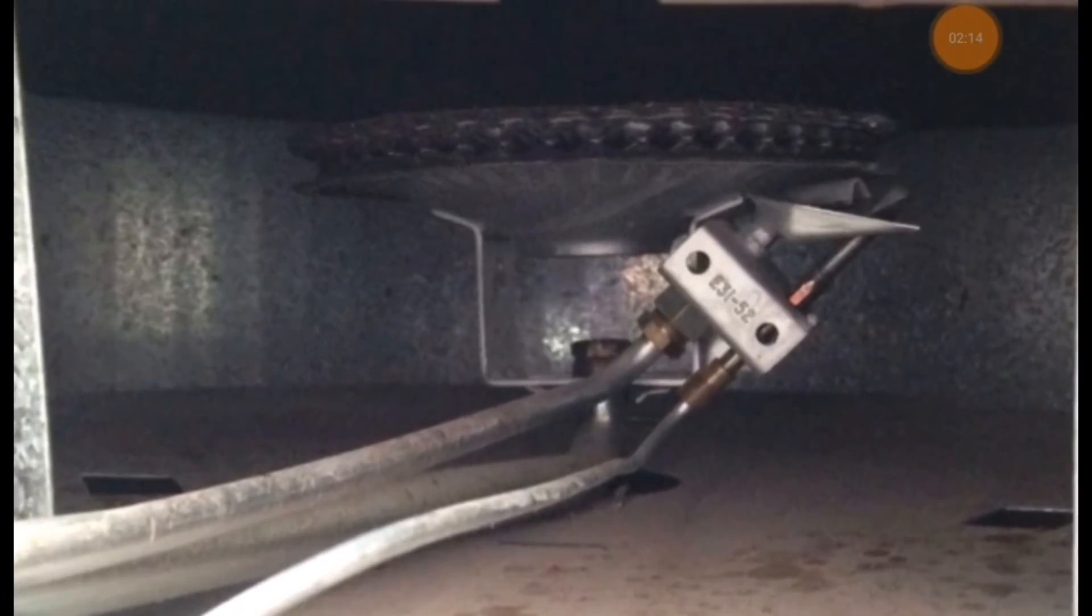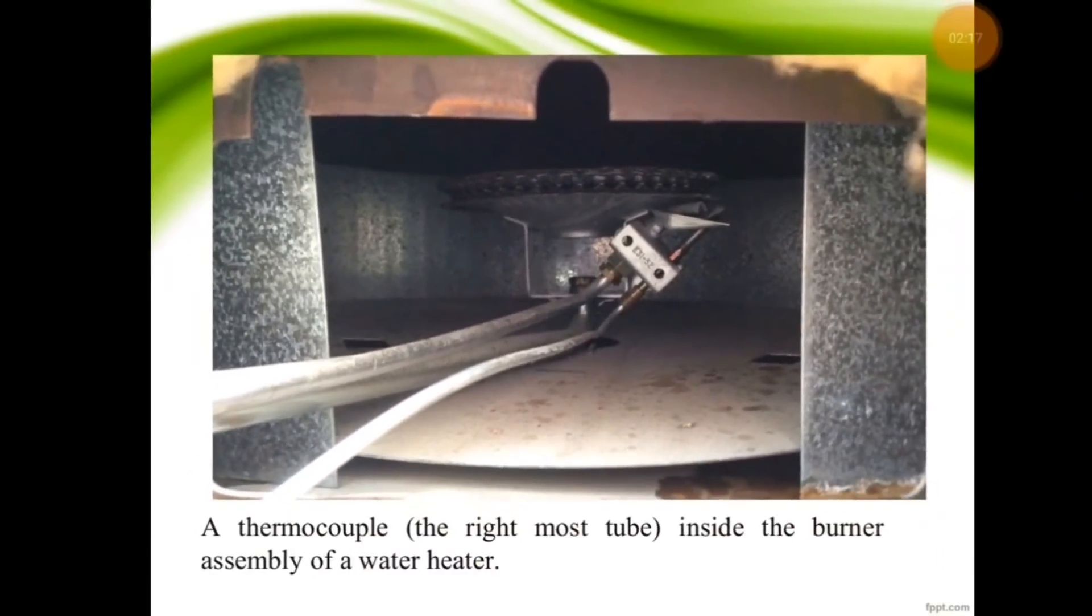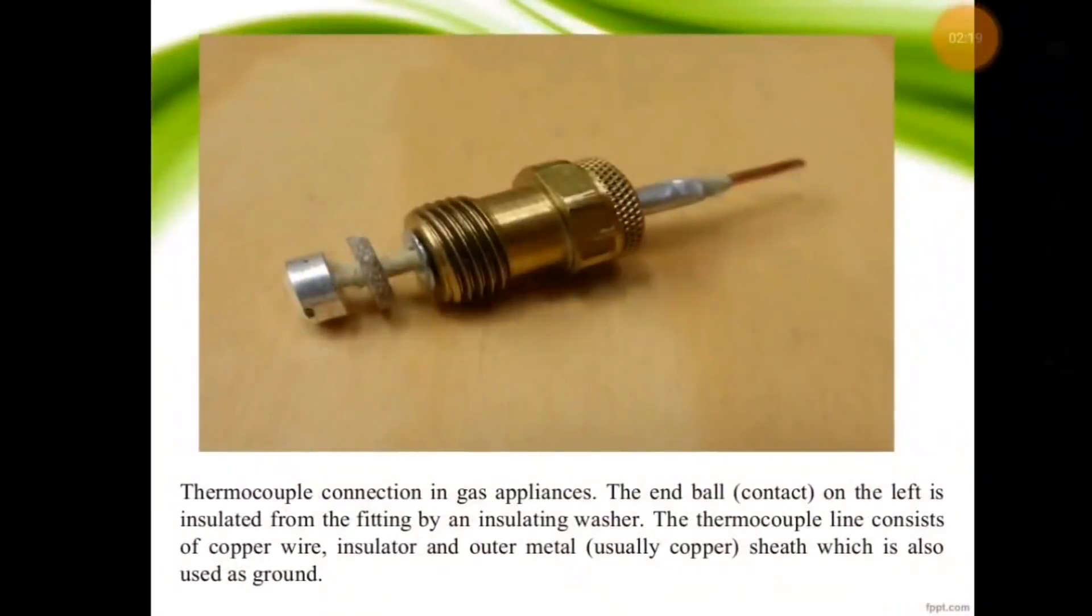This is the burner, the thermocouple, and the thermocouple connection in gas appliances. The end bulb on the left is insulated from the fitting by an insulating washer. The thermocouple line consists of a copper wire, insulator, and outer metal (usually copper sheath) which is also used as a ground.